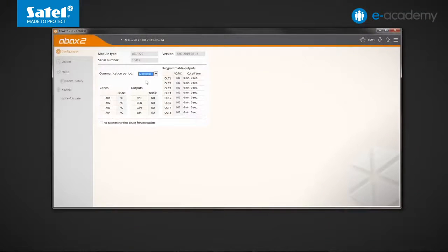Let's go back to the ABAX2Soft program. In the configuration window, you can assign NO or NC type to individual zones and outputs of the ACU-220 module. The choice depends on what you will use the controller for, whether it is to work, for example, with any alarm control panel or in the standalone mode, for example, as a wireless gate controller.